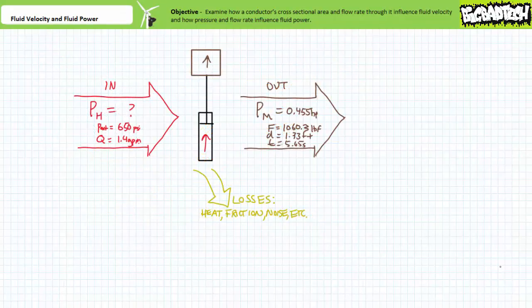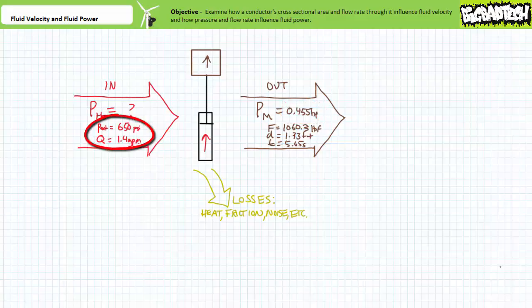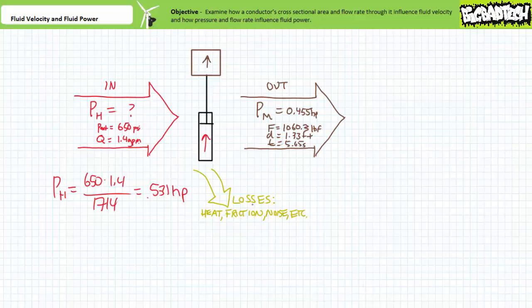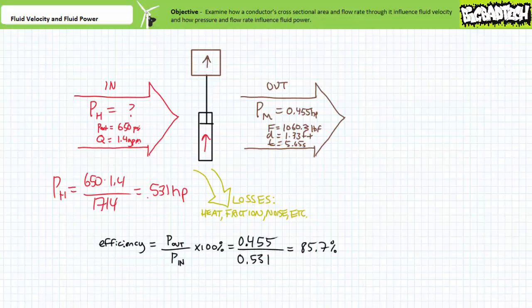This simple example assumes 100% efficiency — an obvious fallacy. Given an actuator is a fluid power to mechanical power converter, only a portion of fluid power input actually gets converted into usable mechanical power, the rest being lost to leaks, friction, heat, or noise. If the actuator supplies 0.455 horsepower of output but the observed input is 650 psi and 1.4 GPM — yielding approximately 0.53 horsepower input — then this actuator is approximately 85.7% efficient.